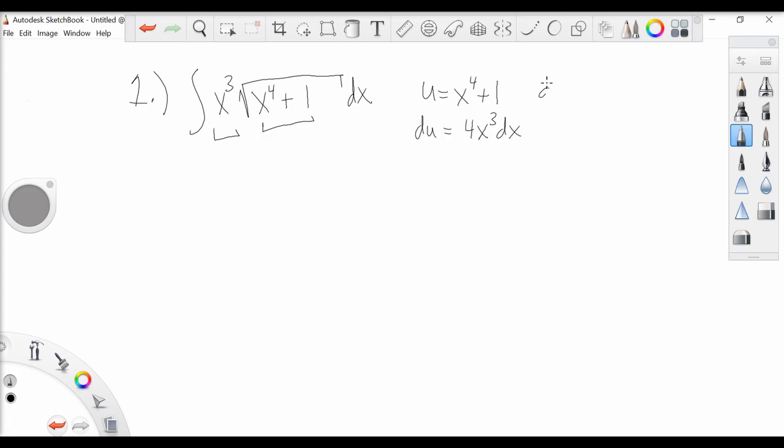Rearranging for dx, we have du over 4x cubed. Let's go back to our original problem. We have x cubed square root of u and we now have du over 4x cubed.